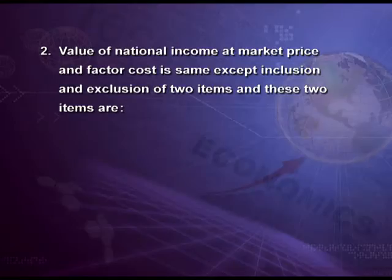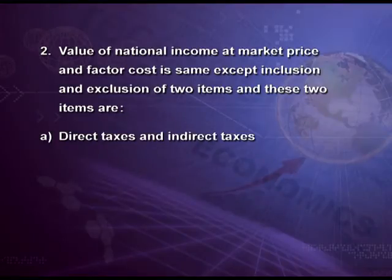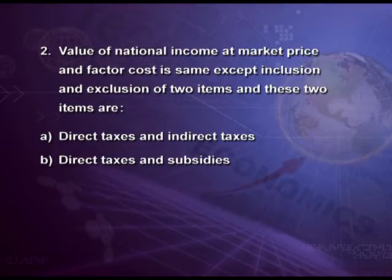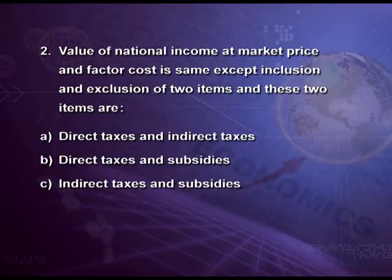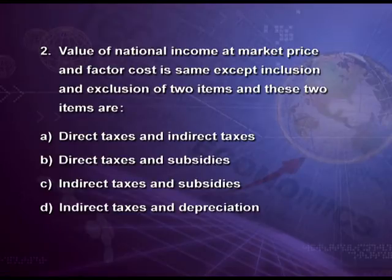Second question: the value of national income at market price and factor cost is the same except for the inclusion and exclusion of two items — what are these two items? Options: direct tax and indirect tax; direct taxes and subsidies; indirect taxes and subsidies; indirect taxes and depreciation. The answer is indirect taxes and subsidies — when we add indirect taxes and subtract subsidies, we get GDP at market price.